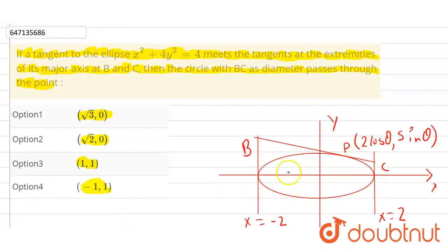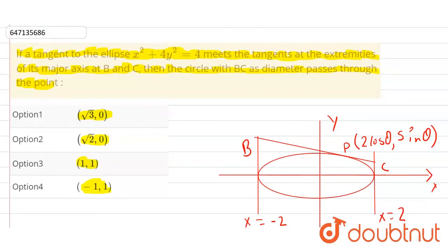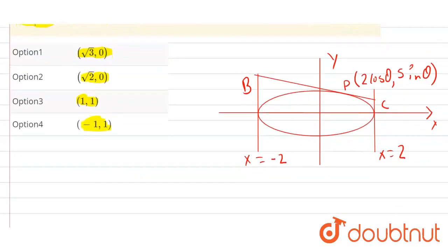So, suppose this is our figure for this question. Now, here we have the given ellipse equation. So, we can write the equation of ellipse as x square upon 4 plus y square upon 1 is equals to 1.